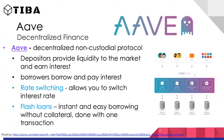Aave is also a lending and borrowing platform where depositors provide liquidity to a pool and earn interest, while borrowers pay interest. Two unique features are rate switching — allowing you to switch your interest rate — and flash loans, which let you borrow without any collateral, completed within a single transaction. You can look into flash loans using the resource linked in the slides.